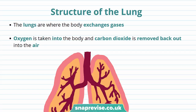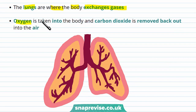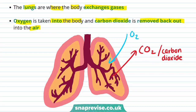Lungs are essential to our bodies because they form gas exchange surfaces. The lungs are where the body exchanges gases. I'll be talking about the structure of the lung and how the structures are adapted for exchanging gases. Oxygen is taken into the body and carbon dioxide is removed back out into the air — so oxygen goes in and CO2 goes out.